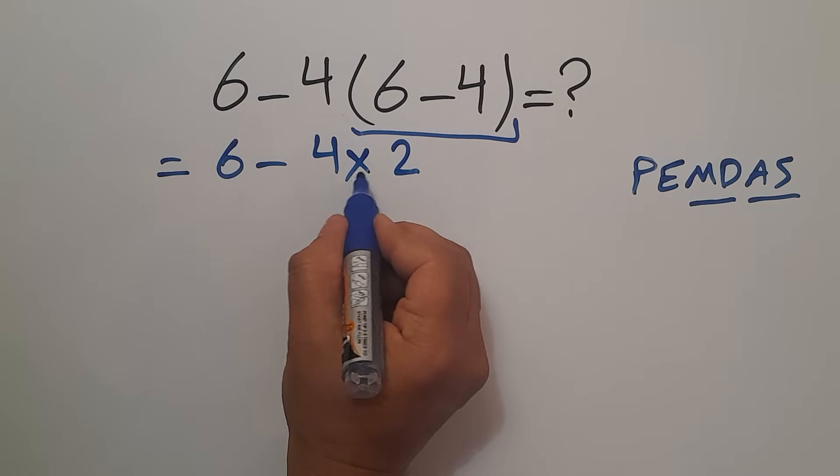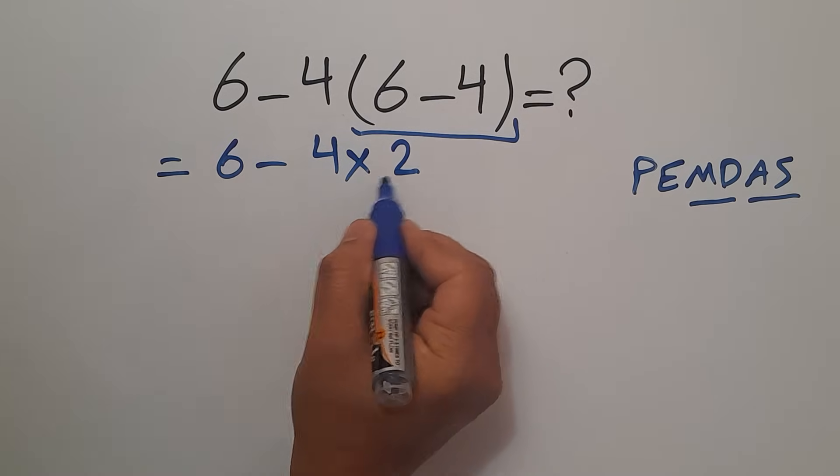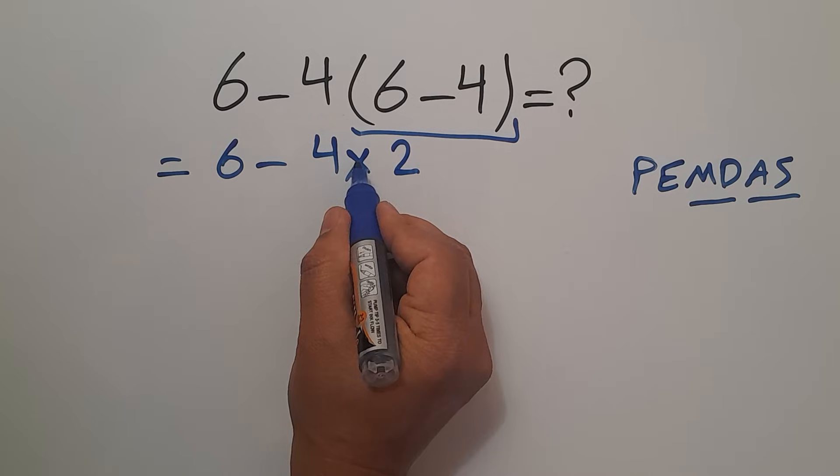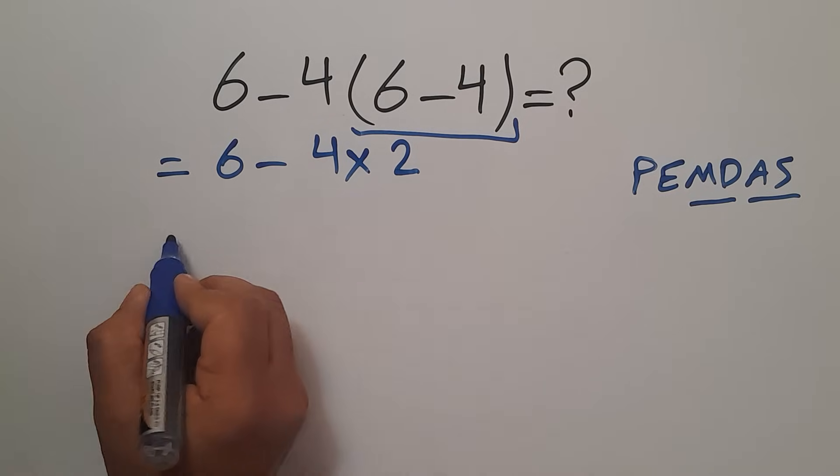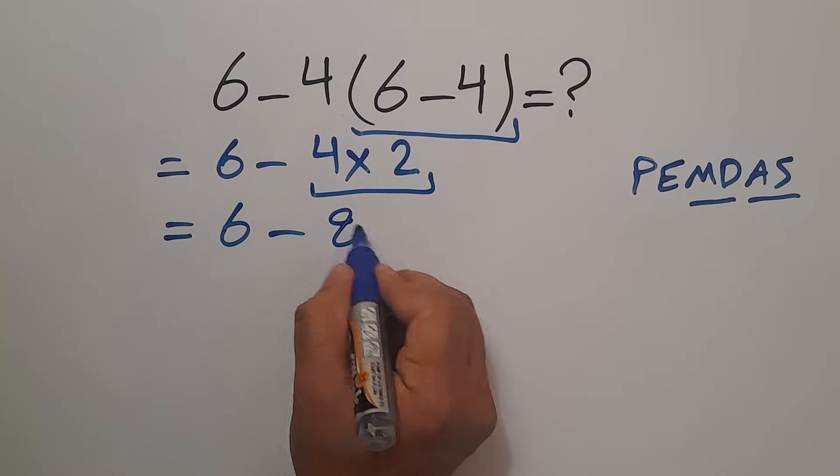Now according to the PEMDAS, multiplication has higher priority than subtraction. So first this multiplication: 4 times 2 equals 8, so 6 minus just 8.